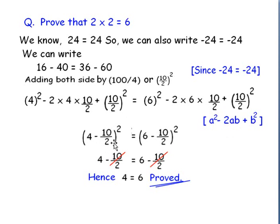So, left hand side became 4 minus 10 by 2 whole square, and right hand side will become 6 minus 10 by 2 whole square, using the identity a square minus 2ab plus b square equals to a minus b whole square.